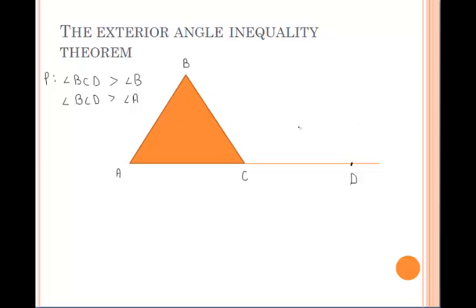Let's talk about where this exterior angle inequality theorem comes from. If we take a look at the diagram here, we want to prove that this exterior angle is greater than each of the remote interior angles. So we are going to locate the midpoint M of segment BC, and we are going to draw a segment AP so that segment AM is congruent to segment MP. Then we connect the two points C and P.